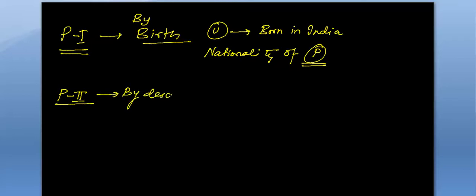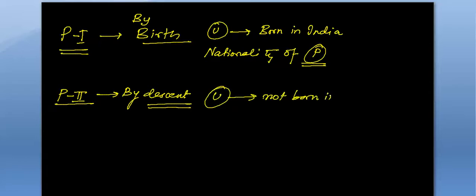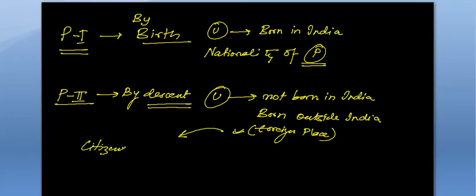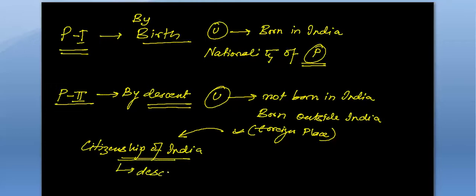What do you mean by citizenship by descent? This means that you are not born in India but you are born outside India in some foreign place — your birth took place there. After your birth you want to get citizenship of India, so how you can get that citizenship — that is through descent.